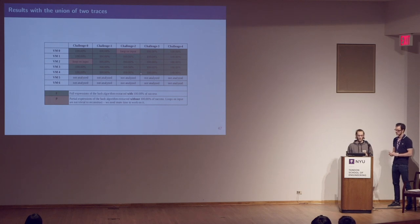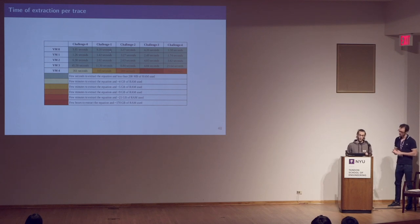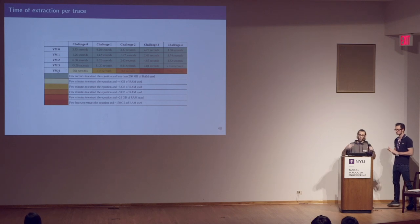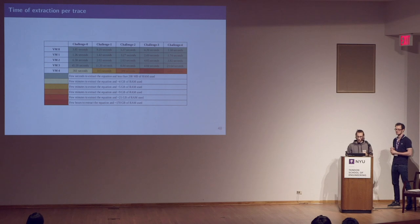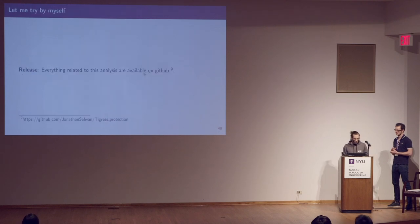Except for two challenges, because they use a loop on the user input, and reconstructing a loop from dynamic traces is harder. We solved all challenges with Fuse-Shagon, and only for VM4 — the double virtualization — Triton used a lot of RAM and spent two hours to reconstruct a new binary. Now I have a demonstration.